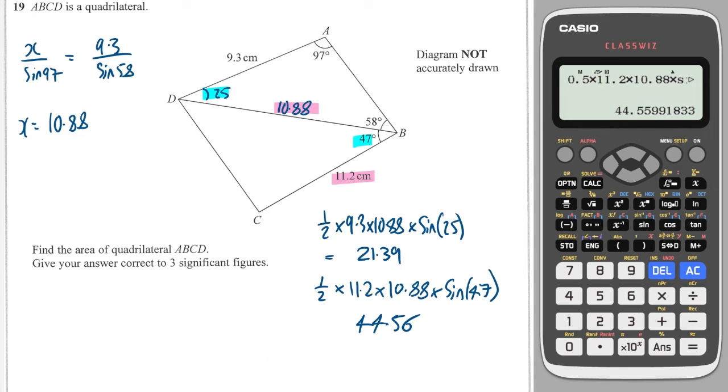So we add that to our 21.39 to get the total area of ABCD and that's equal to 65.9.